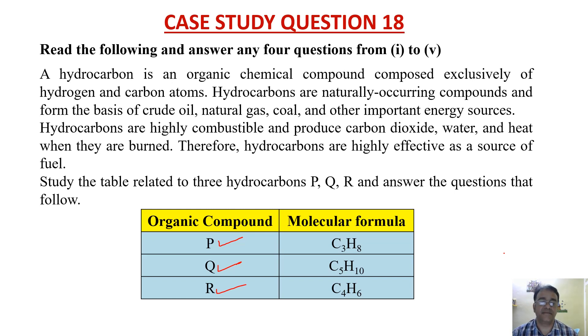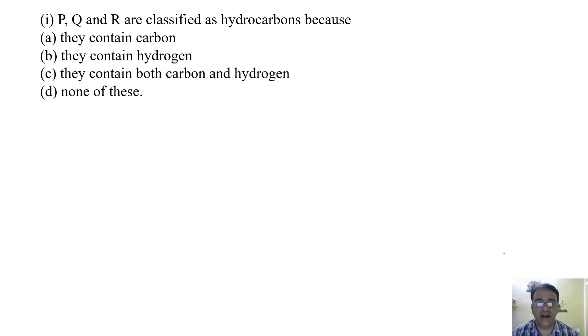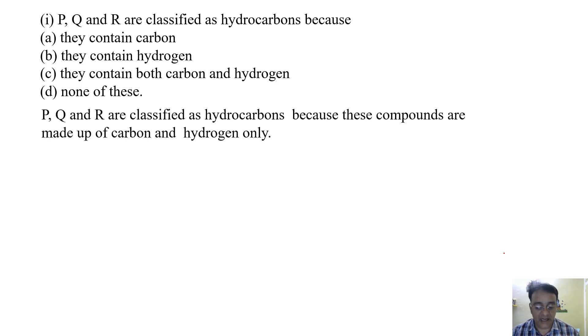The first question: P, Q, and R are classified as hydrocarbons because they contain carbon, they contain hydrogen, they contain both carbon and hydrogen, or none of these. Very good! P, Q, and R are classified as hydrocarbons because these compounds are made up of carbon and hydrogen only. So the correct option is C.